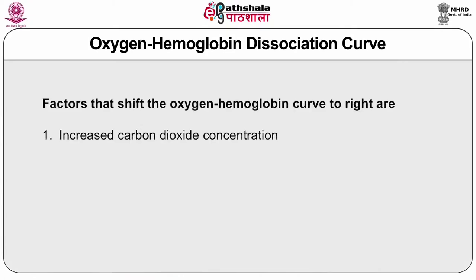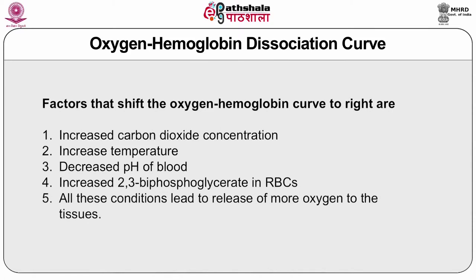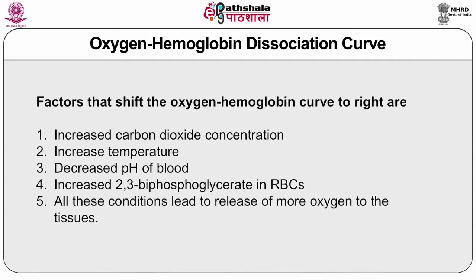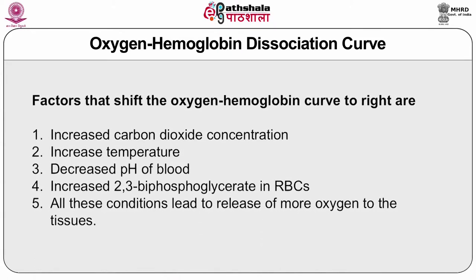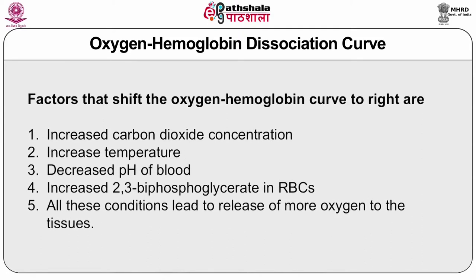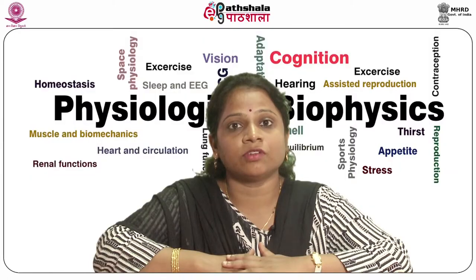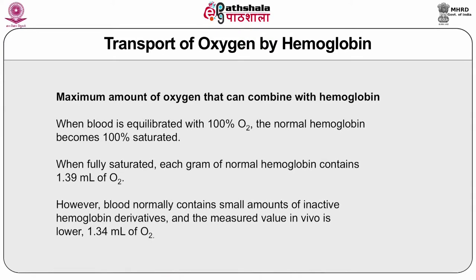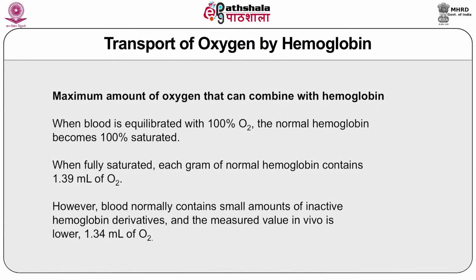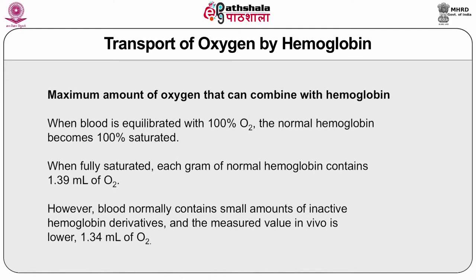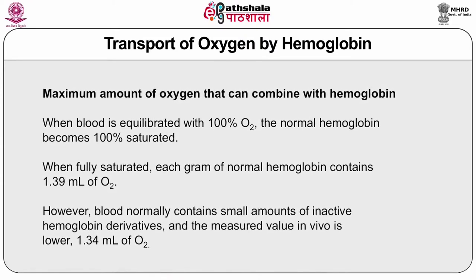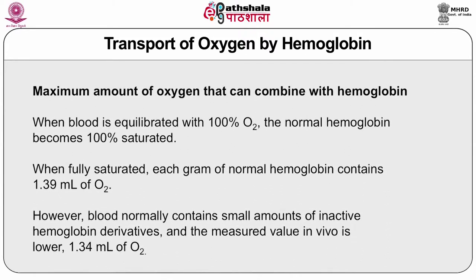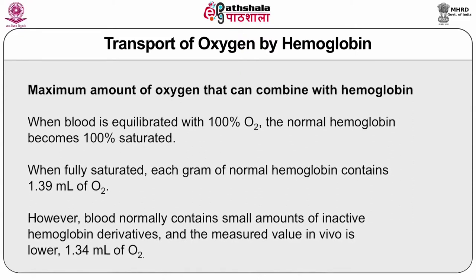Factors that shift the oxygen-hemoglobin dissociation curve to the right — meaning increased release of oxygen to tissues — include: increased carbon dioxide concentration, increased temperature, decreased pH of blood, and increased 2,3-bisphosphoglycerate in red blood cells. All these conditions lead to release of more oxygen to the tissues, as observed during exercise. When blood is equilibrated with 100% oxygen, normal hemoglobin becomes 100% saturated. When fully saturated, each gram of hemoglobin contains 1.39 ml of oxygen; however, due to small amounts of inactive hemoglobin derivatives, the measured value in vivo is lower at 1.34 ml.